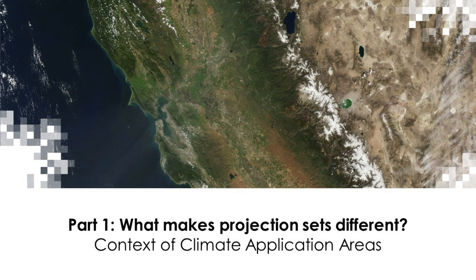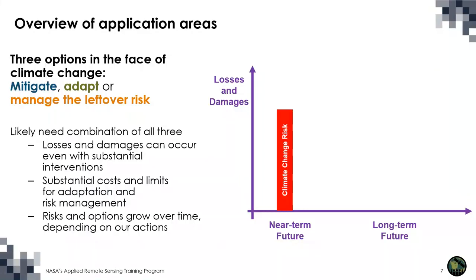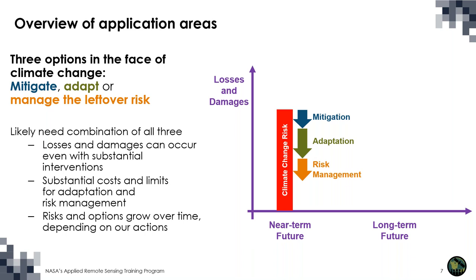It's important to start by understanding the context of various climate application areas. As we think about climate change, we are faced with increasing climate change risk going into the future. There are three options in the face of this increasing risk: we can mitigate some portion of the climate change signal so we have less climate change to deal with to begin with. We can adapt our systems so that they are more able to withstand future climate conditions. And we can manage the risk in terms of understanding what's left over.